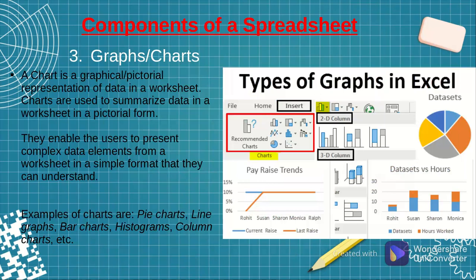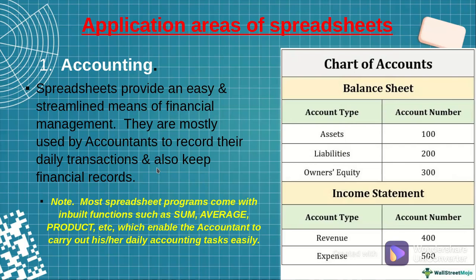The third component that we have are graphs, also called charts. A chart is just a graphical representation of data on a worksheet. Graphs are very important because a picture speaks a thousand words — you can use a graph to present data that is very vast and very complex, but it's easy to understand and digest if represented diagrammatically. On the screen you can see some examples of charts: pie charts, line graphs, bar charts, histograms, and so on.